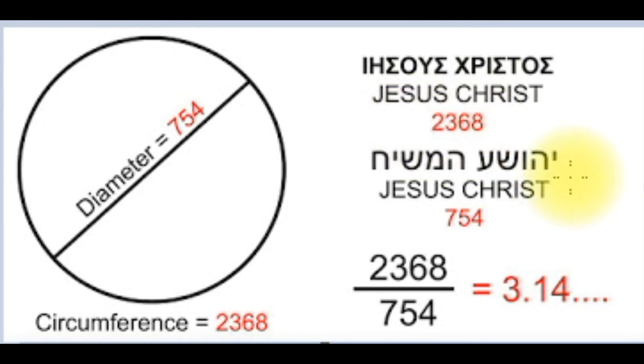In Hebrew, Joshua means the one who saves. The Mashiach, the Messiah, the one who saves, the Messiah, has a Hebrew gematria sum total value of 754. A circle with a diameter of 754 has a circumference of 2,368. Pi, encoded in the name Jesus Christ in the marriage of Hebrew and Greek.